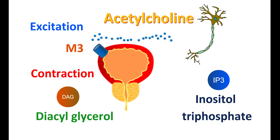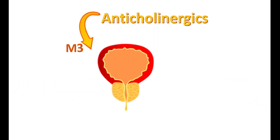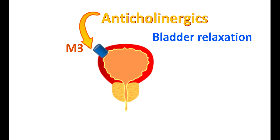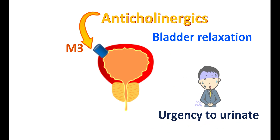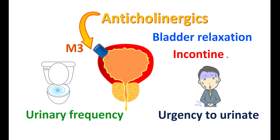Therefore, in people with overactive bladder, contractions of bladder muscles can be controlled by limiting the action of acetylcholine. Anticholinergics work by selectively blocking M3 receptors in the bladder, thereby preventing the action of acetylcholine. This results in bladder relaxation, relieving OAB symptoms — reducing the urgency to urinate and urinary frequency. As the bladder is relaxed, it can accommodate a larger amount of urine, which minimizes incontinence.